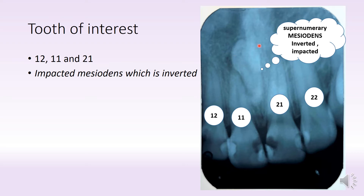and it's not only impacted but it's also inverted in position, where you can see from this image here that the crown is placed close to the apex of the teeth and the roots are facing the other way around. So this tooth is actually an impacted, inverted mesiodents.